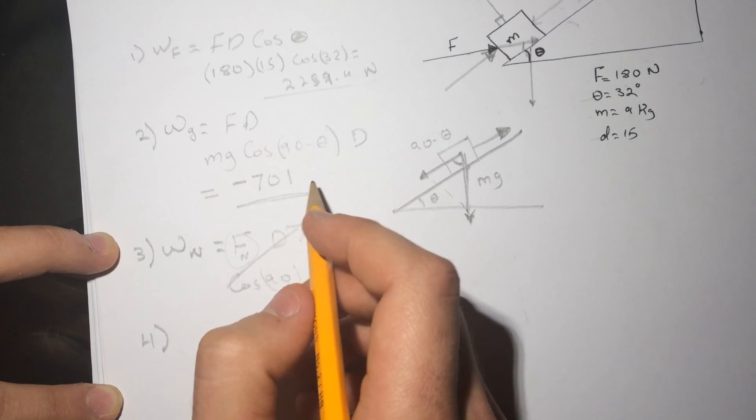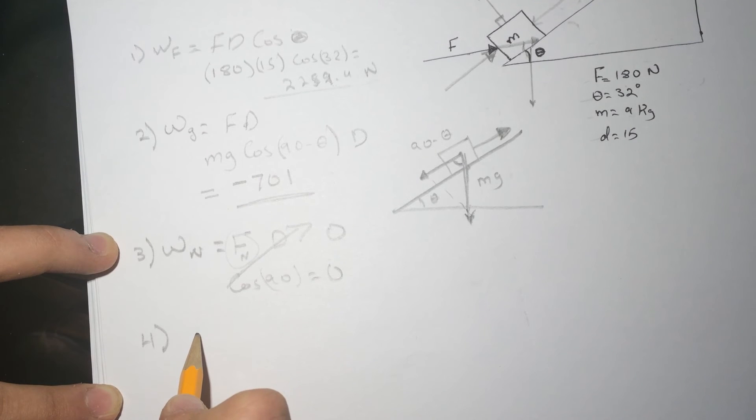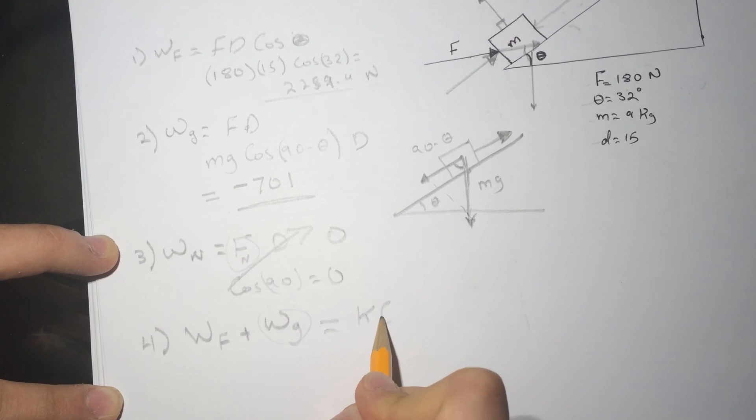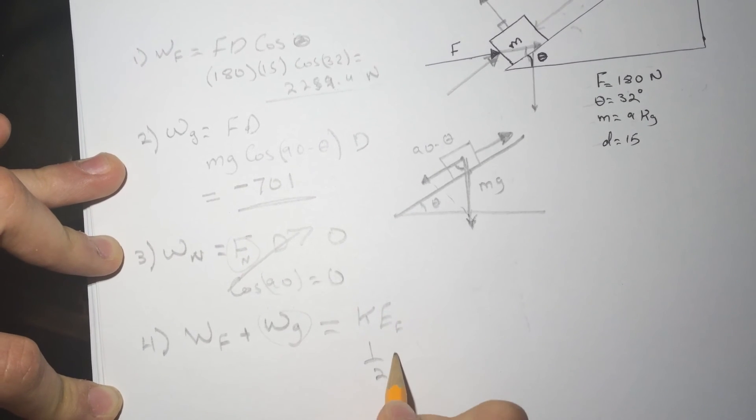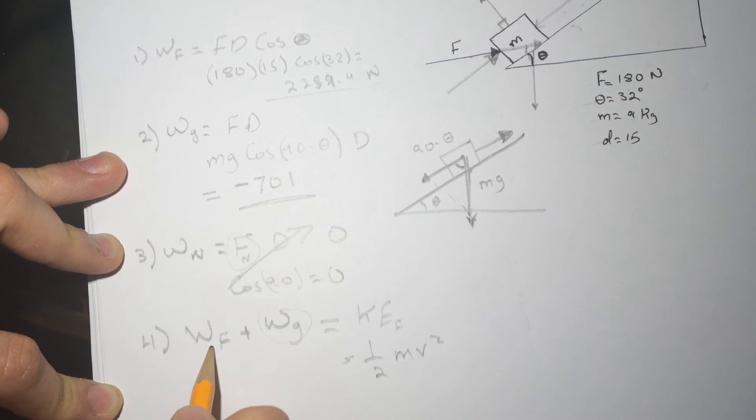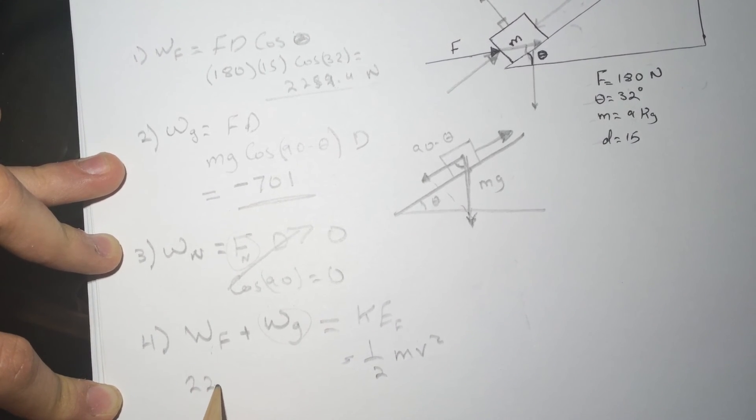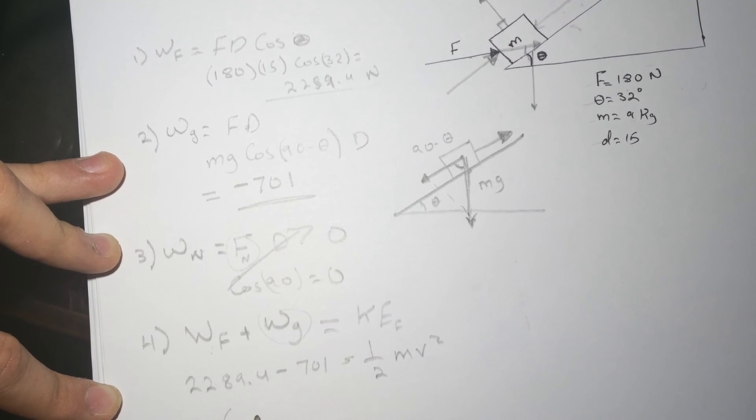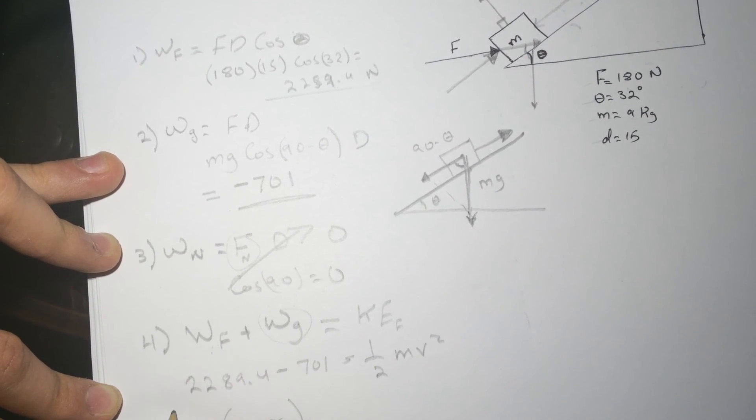So if we minus them from each other, the work by the force minus the work by the gravity, if we add them because this is already negative, equal the kinetic energy final which is half mv squared. And this will be like 2289.4 minus 701 and then just multiply the two by this value that you'll get here and divide it by the m the mass and take the square root of it.